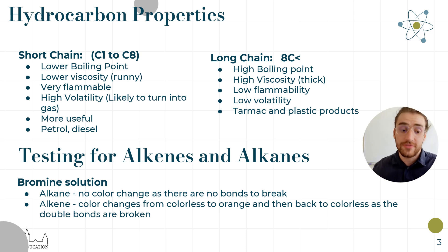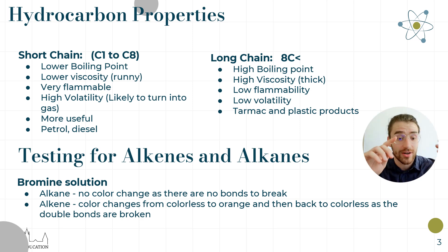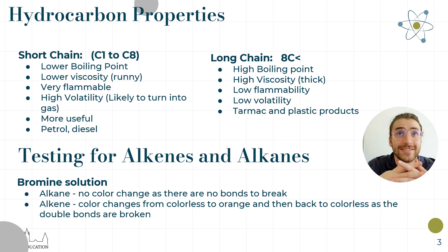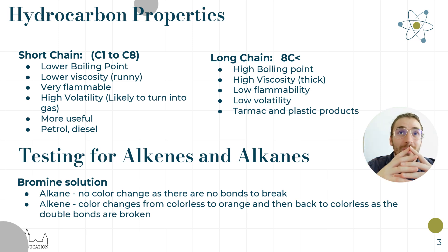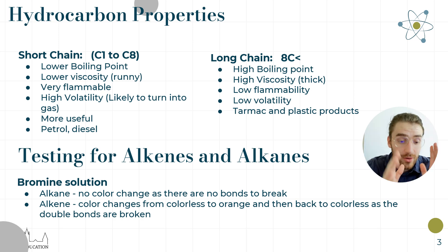It's good to remember these points — try to understand rather than just memorize. Short-chain hydrocarbons, roughly one to eight carbons, have a lower boiling point, which makes sense because they are much more reactive. They also have a low viscosity — viscosity is how thick something is. Think of propane, which is a gas. Longer-chain hydrocarbons are thicker and have a higher boiling point because the bonds between them are stronger.